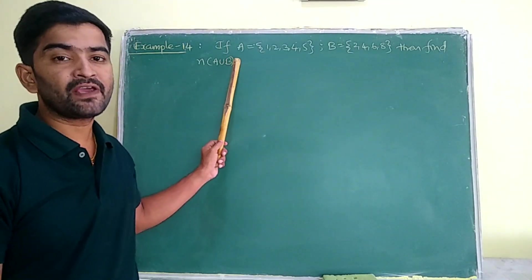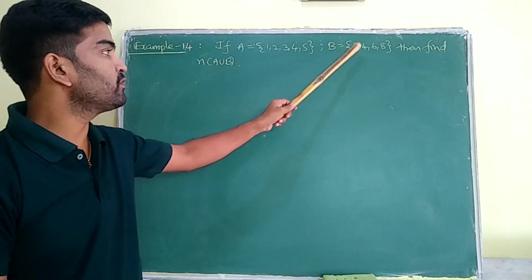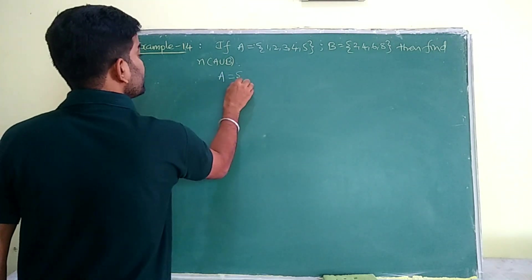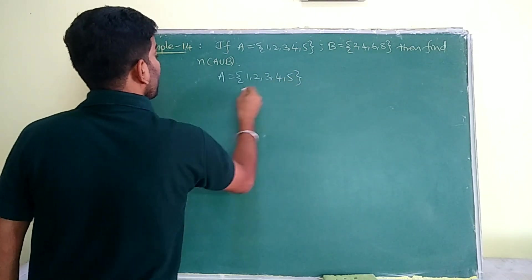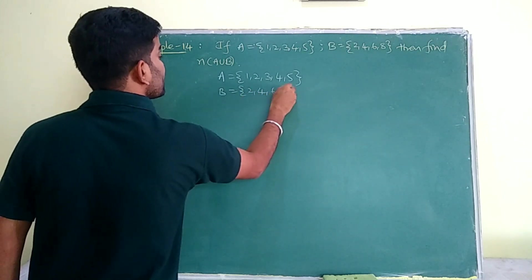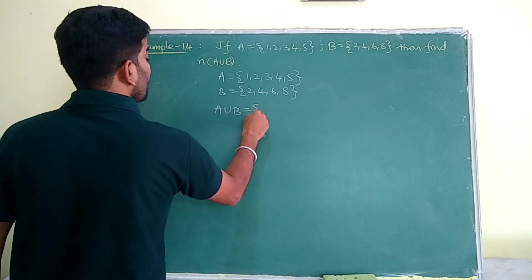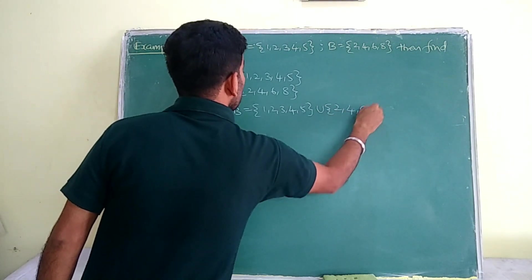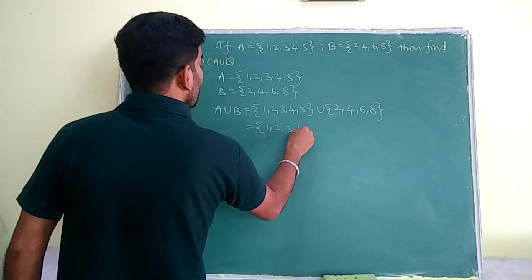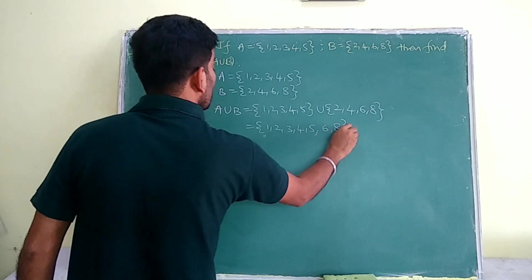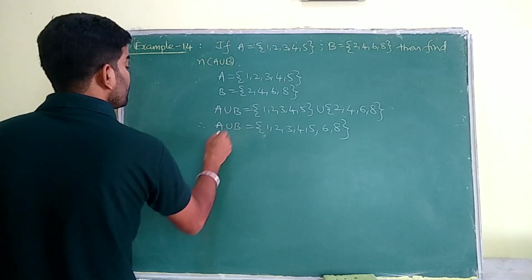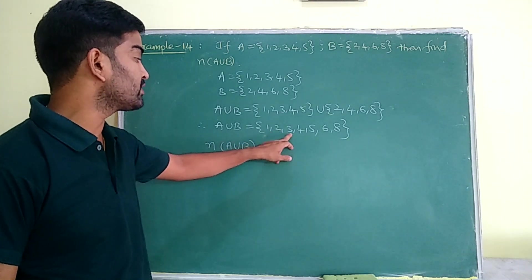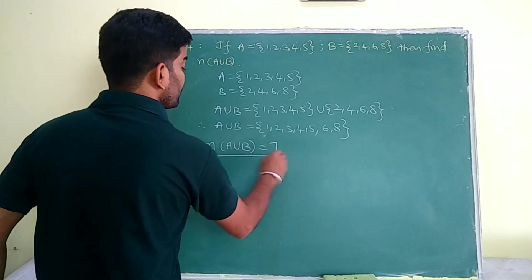Example 14: If A = {1, 2, 3, 4, 5} and B = {2, 4, 6, 8}, find the number of elements in A union B. First find A union B by writing all elements of A and B together: {1, 2, 3, 4, 5, 6, 8}. The cardinality of A union B — count the elements: 1, 2, 3, 4, 5, 6, 7. So the number of A union B is equal to 7.